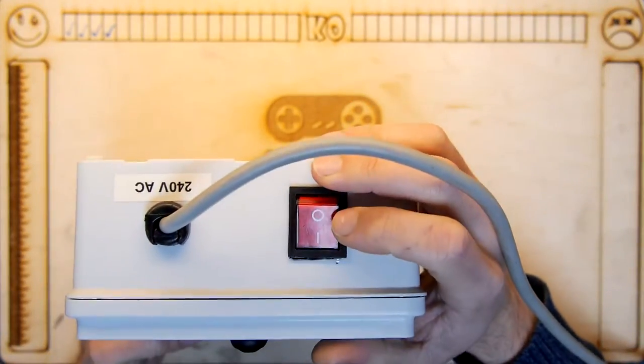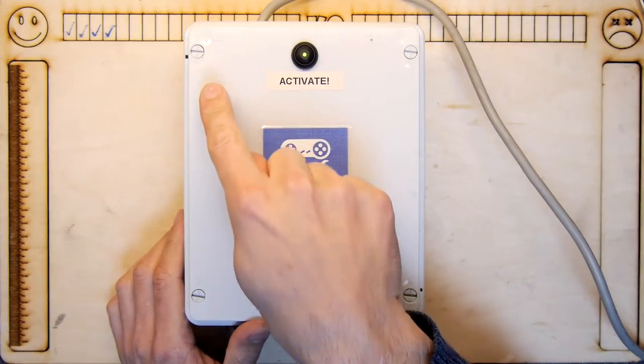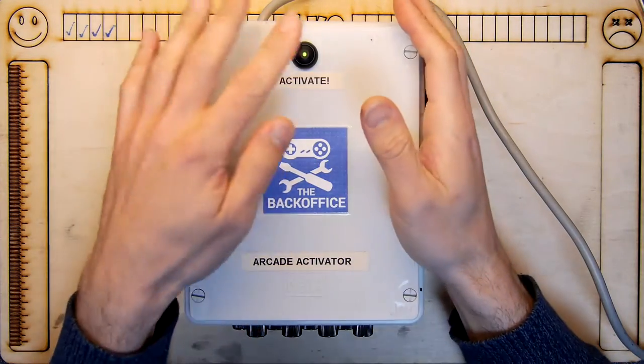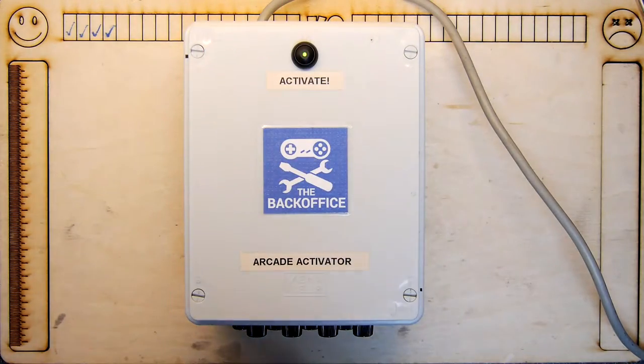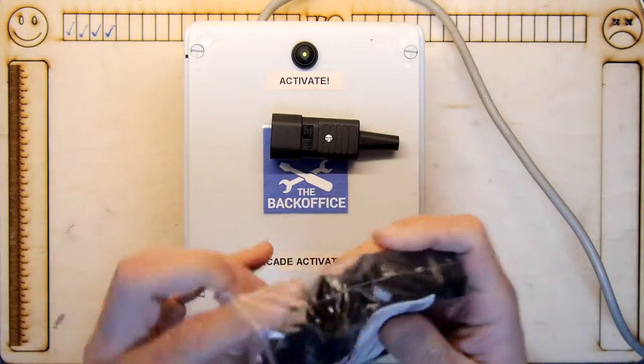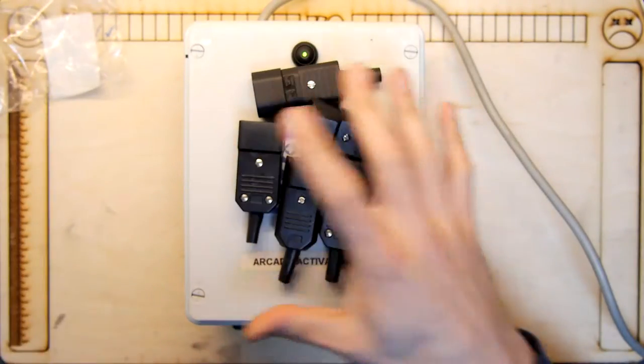On the top you have a master on-off, so hitting that will kill power instantly to all the ports. But if you leave it on and let the microcontroller inside do the work, it will slowly turn on 1, 2, 3, 4, 5, 6, 7, 8 in that order. And that will allow your arcade machines time to degauss.